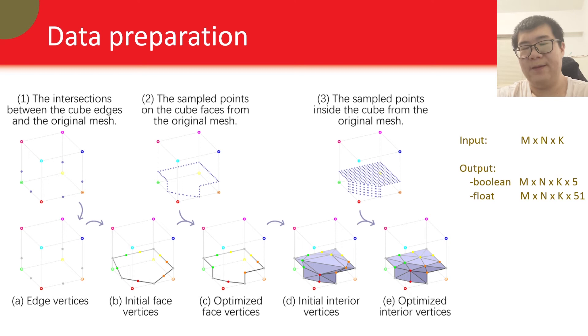After we have the templates, we can start processing the data. That is, we need to convert a mesh into a grid of signed distances or voxels as input. And we also need to convert the mesh into these regular grid outputs for training the network. This is done by sampling a dense point cloud for each cube from the ground truth mesh, and minimizing the Chamfer distance between the point cloud and the template.